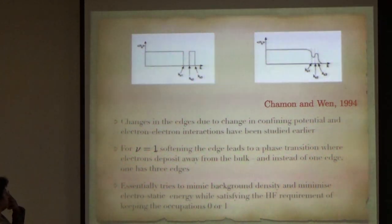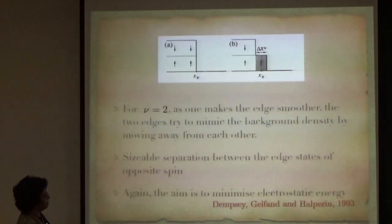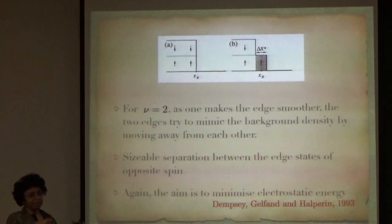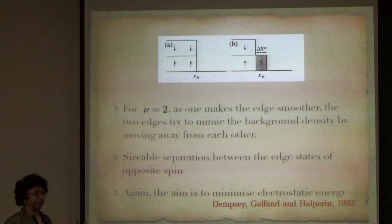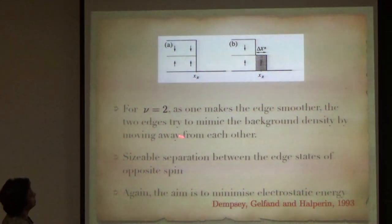So, the aim is that somehow the system wants to minimize the electrostatic energy by mimicking the background density. This was also done for nu equals 2. They made the edge smoother, and then the two edges try to minimize the background density by moving away from each other. So, you have different edges for the up spin and for the down spin. So, this is the way it tries to minimize its energy.